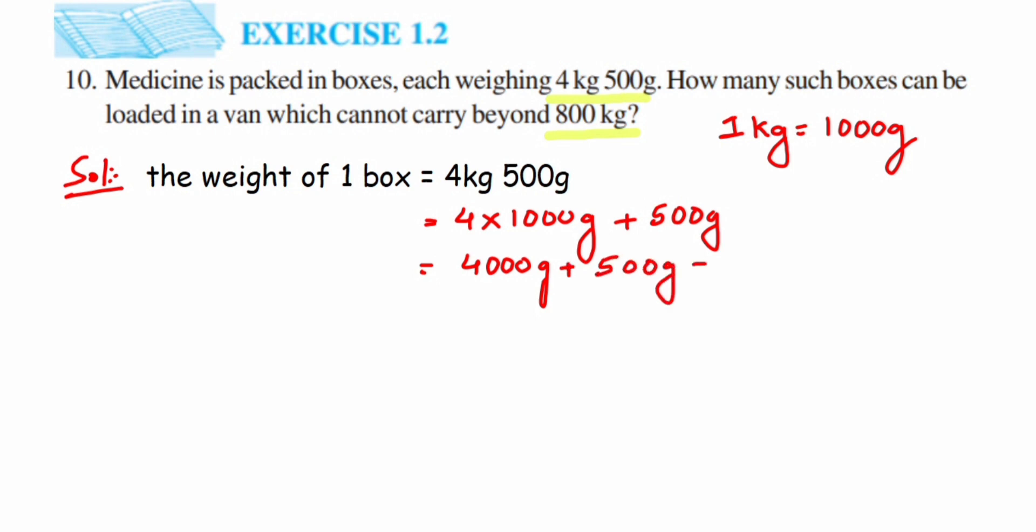We have to convert that as well. So 800 kg will be equal to - we know that 1 kg is equal to 1000 grams, so it will be 800 multiplied by 1000 grams, and this will be equal to 800,000 grams. Now we have to get the answer, so we have to divide these two numbers.